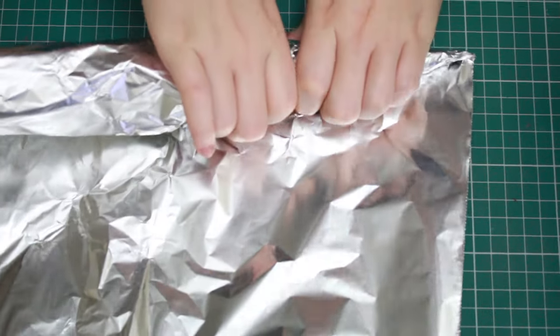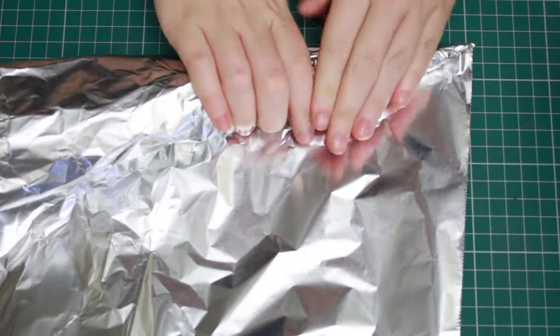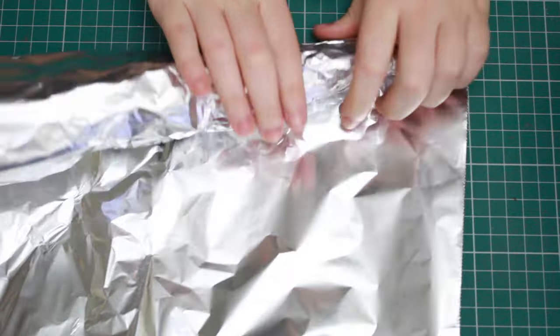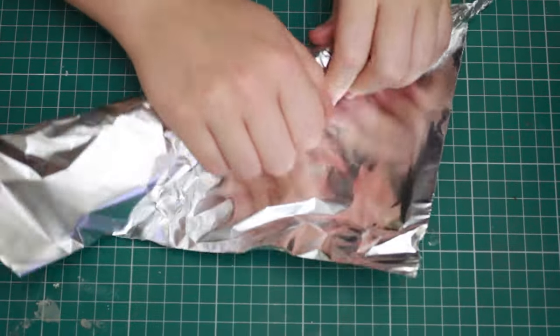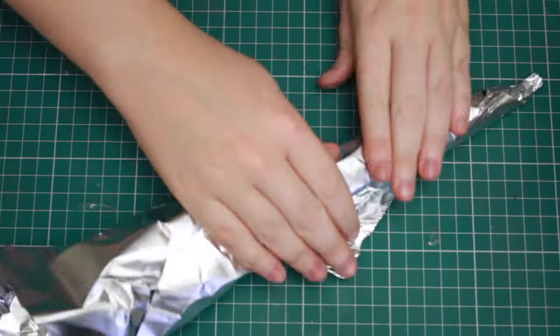If you want the horns to be quite big, then you're going to need to make this strip of tin foil quite long. But if you want them shorter, then you can just cut them down to size, which is what I'm going to do.